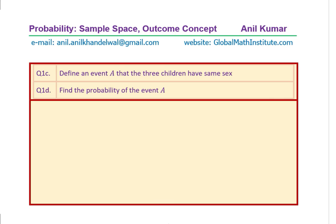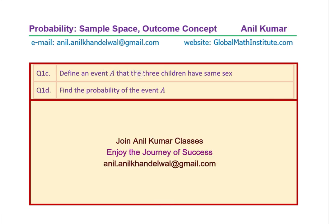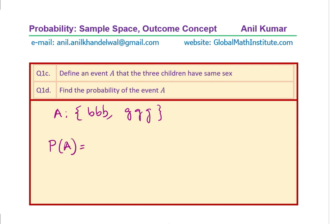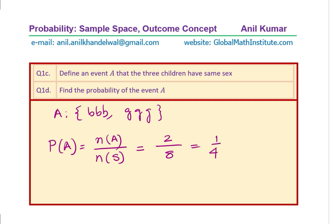Part C: define an event A that the three children have the same sex. Event A means either 3 boys (BBB) or 3 girls (GGG) — these are the 2 favourable outcomes. The probability of event A is 2 out of 8, which simplifies to 1 out of 4.